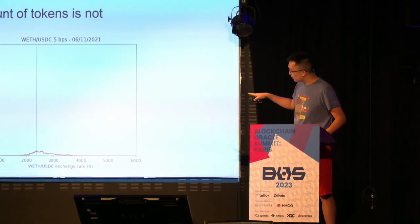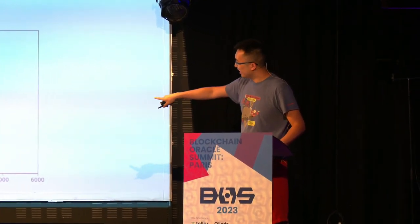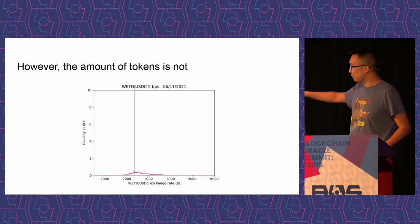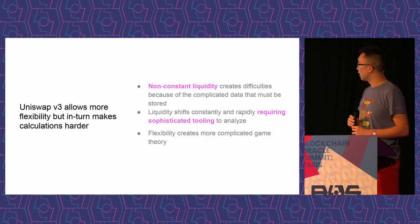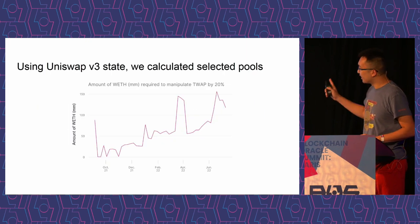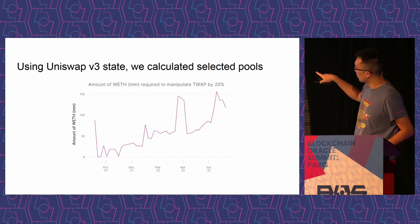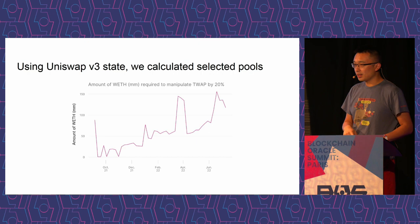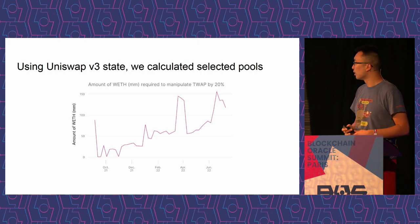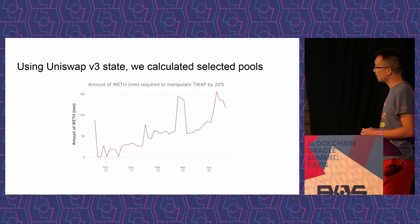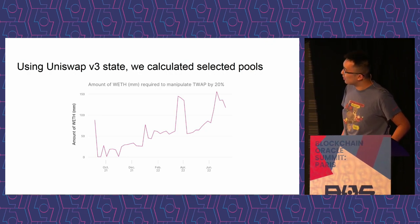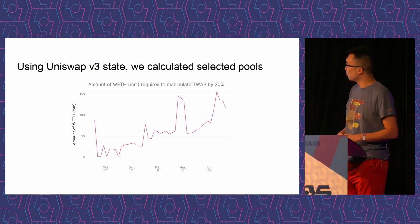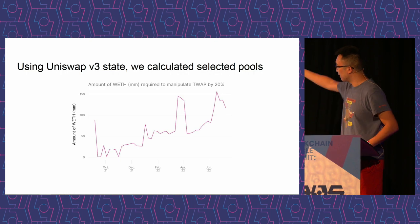The liquidity distribution also changes through time, so it's non-trivial to calculate the exact amount you would need ahead of time. But we did it. For this WETH/USDC pool, we were looking at the amount of WETH required to manipulate the pool by a particular amount — it's a stylized example. Somewhere last year you'd need around 150 million WETH, which is like billions of dollars, in order to manipulate this Oracle by that specific amount.